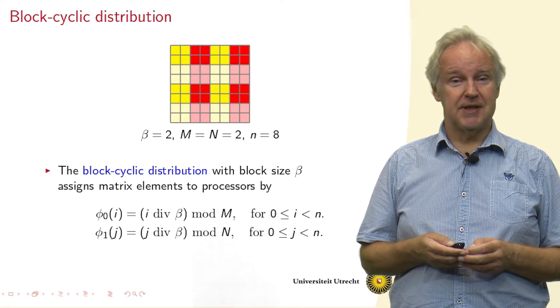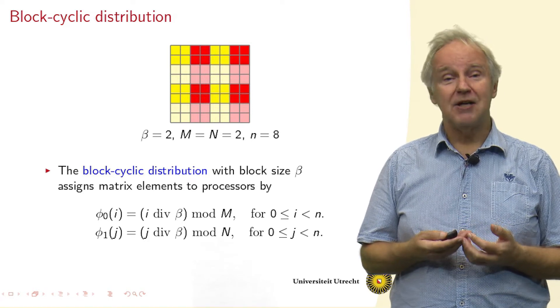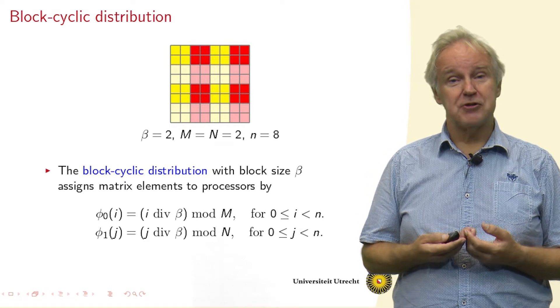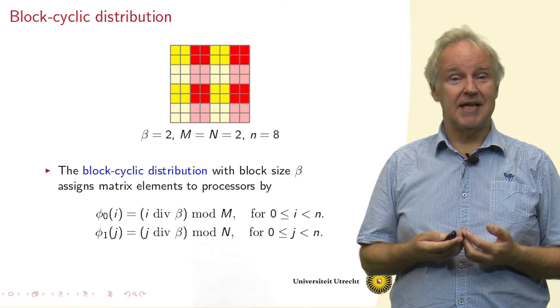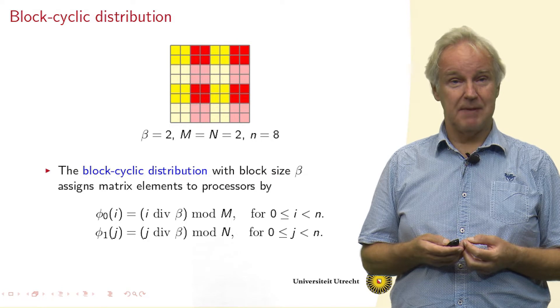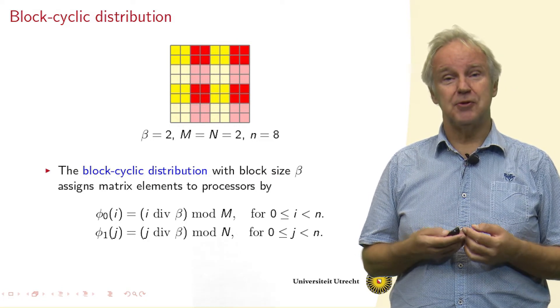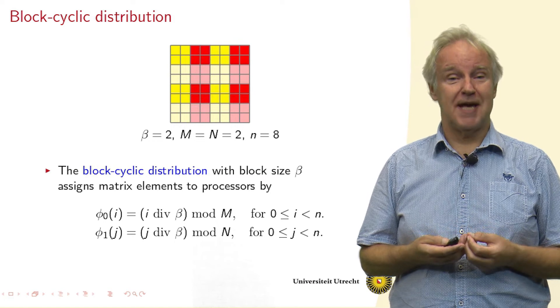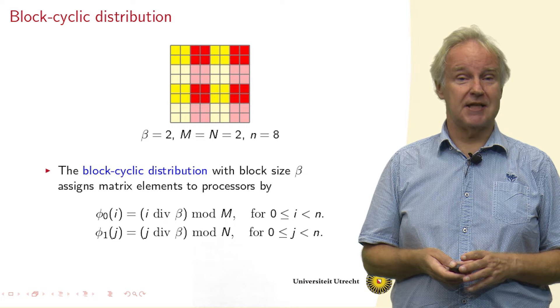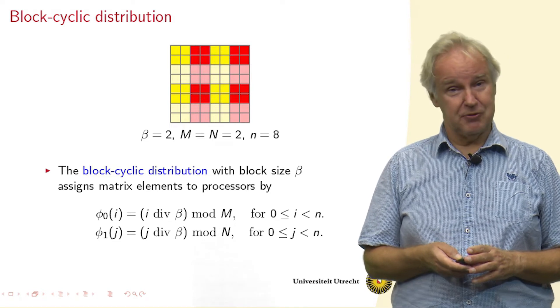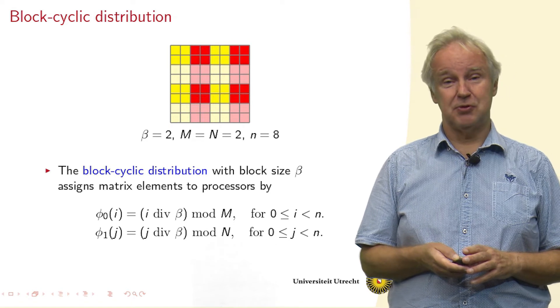The formula that you then get is for the row distribution, row i of the matrix. You first compute the block number, that's by i divided by β. And then you do that modulo capital M. Something similar for the columns. So this is the block cyclic distribution. If you take β = 1, then you get the regular cyclic distribution back.